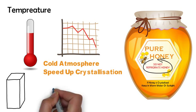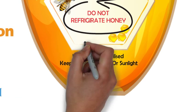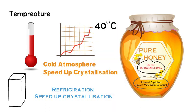This is because refrigeration hastens the process of crystallization. It also reads, if honey is crystallized, keep in warm water or sunlight, because the honey comes back to liquid form when it reaches 40 degrees centigrade.